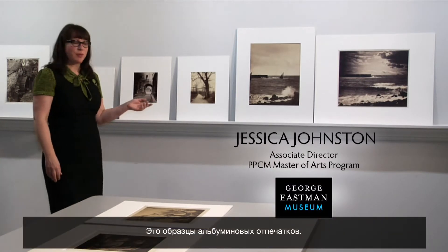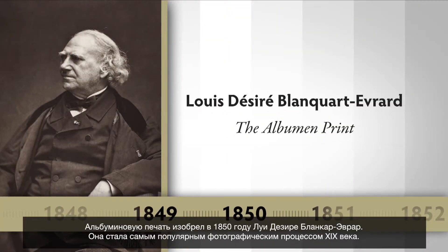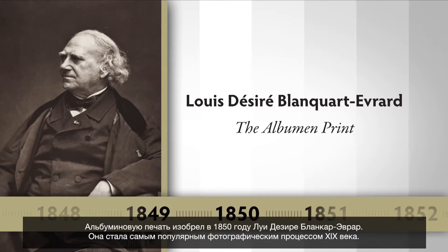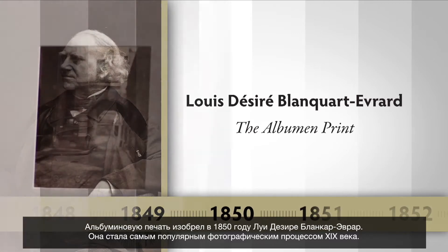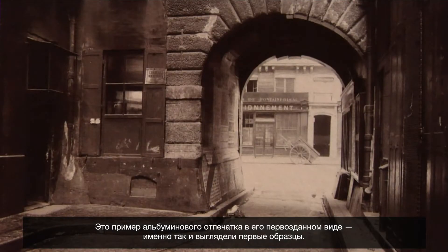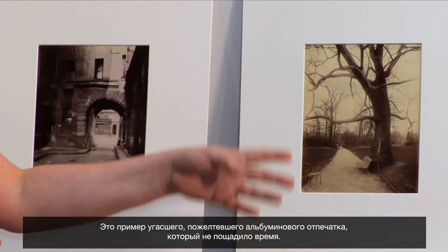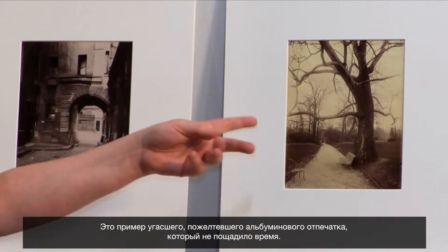These are examples of albumin prints. The albumin print was invented in 1850 by Louis Desiree Blancart-Evrard and was the most popular photographic process in the 19th century. This is an example of a pristine albumin print, how it would have looked when it was first produced. This is an example of a faded yellowed albumin print, characteristic of albumin deterioration.